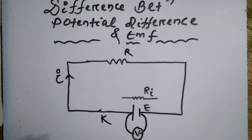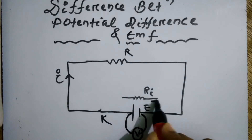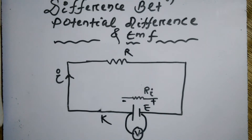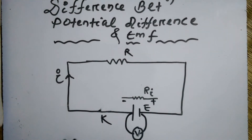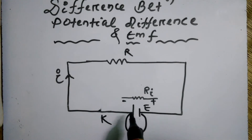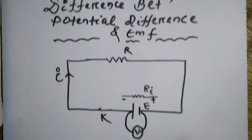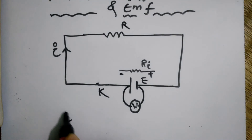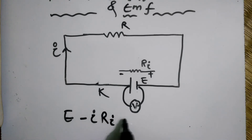The current enters at one point and exits at another. The direction of the EMF and the direction of the voltage drop across the internal resistance are opposite. So whenever the voltage drop occurs across the internal resistance, the value of E is decreased by I·r. Therefore: E minus I·r equals the potential difference V.